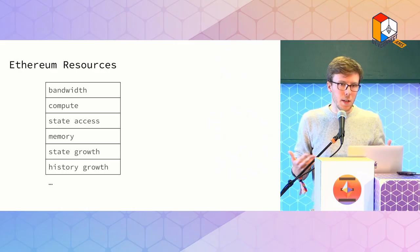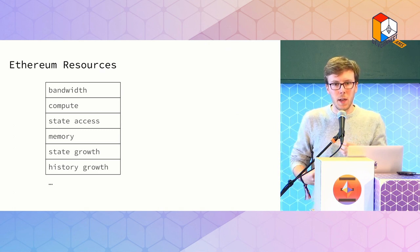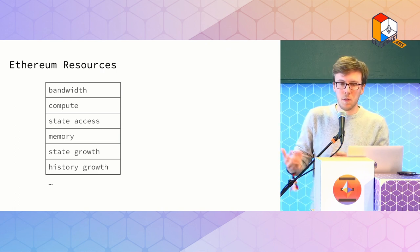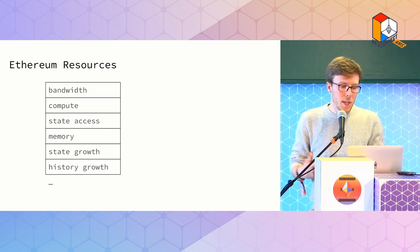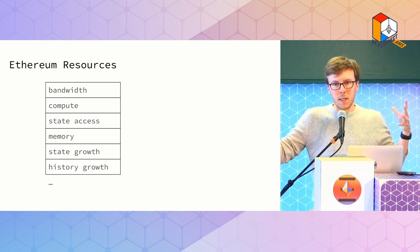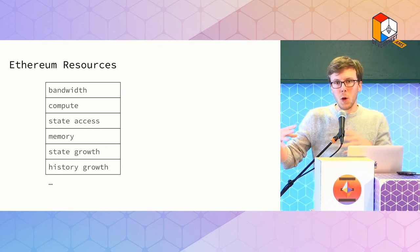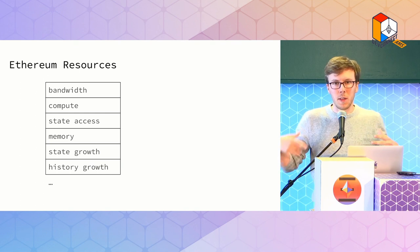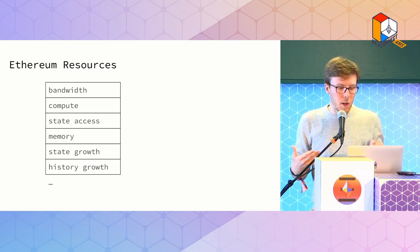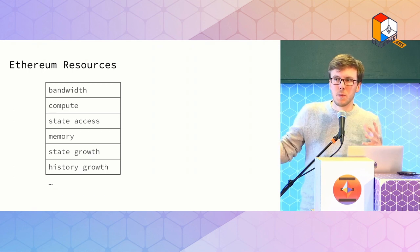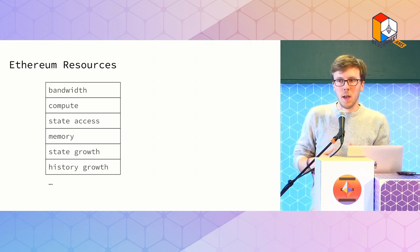What are these resources that we want to efficiently allocate on Ethereum? It turns out there are quite a few different ones. This is not a conclusive list, but some of the most common: there's bandwidth — how big are the blocks gossiped between individual nodes — there's compute for processing blocks, state access, memory, and then there's state growth, which is the state that all nodes have to permanently hold and grows forever. That's expensive. And then also there's history growth — keeping historical blocks around.